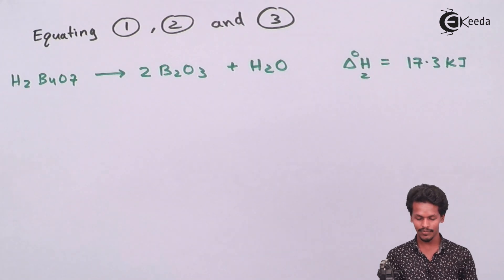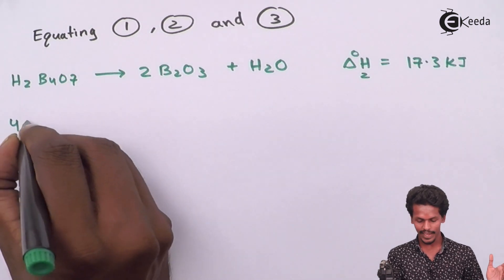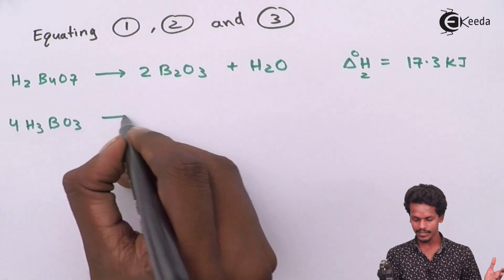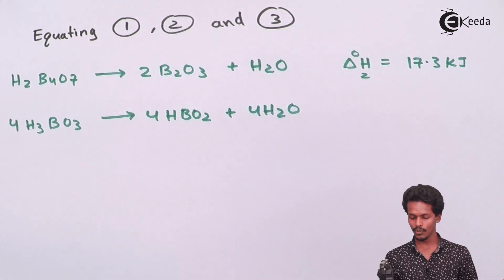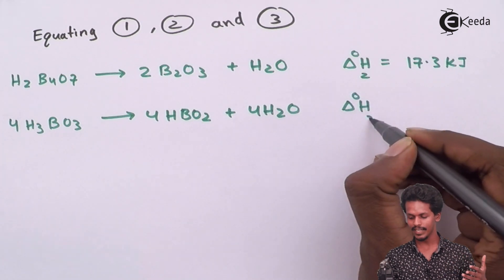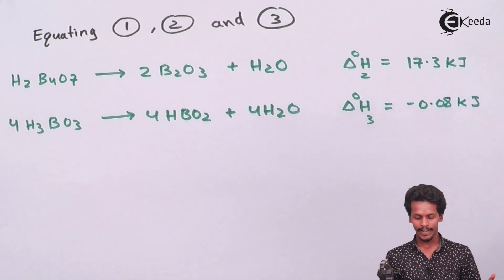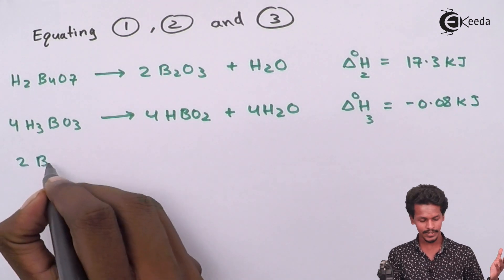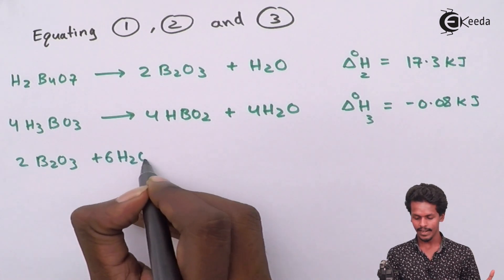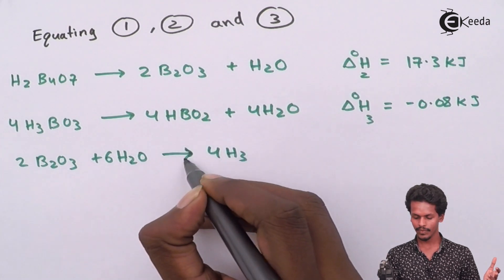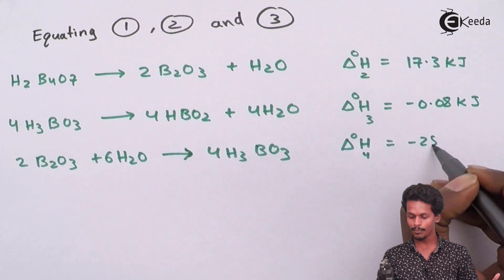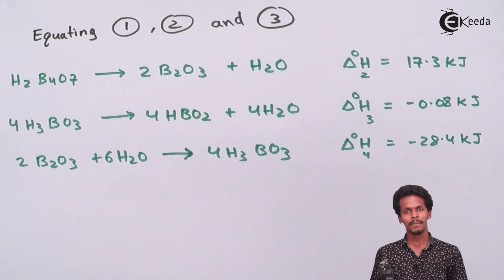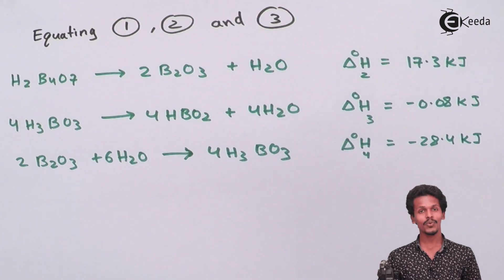Equation 1: H₂B₄O₇ → 2B₂O₃ + H₂O, ΔH = 17.3 kJ. Equation 2: 4H₃BO₃ → 4HBO₂ + 4H₂O, ΔH = −0.08 kJ. Equation 3: 2B₂O₃ + 6H₂O → 4H₃BO₃, ΔH = −28.8 kJ.